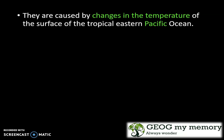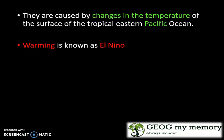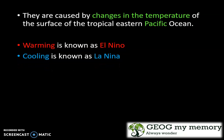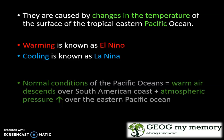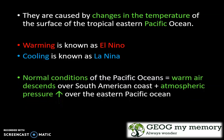Basically, they are caused by changes in the temperature of the surface of the tropical eastern Pacific Ocean. Warming is known as El Niño and cooling is known as La Niña. The normal conditions of the Pacific Ocean include